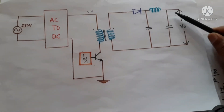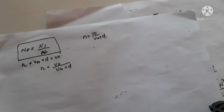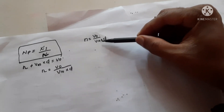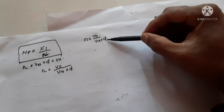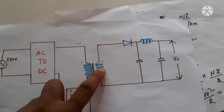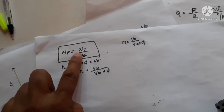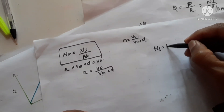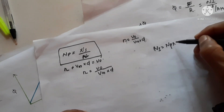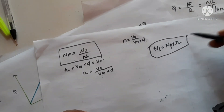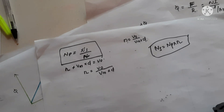Now we calculate the number of secondary turns. First we need to know what output voltage we want — here it is 5 volts — and the input voltage is around 300 volts with a duty cycle of 0.5. This gives us the turns ratio between primary and secondary. We multiply the primary turns by this ratio to get the secondary turns. This way we can calculate both the primary and secondary turns of the transformer.